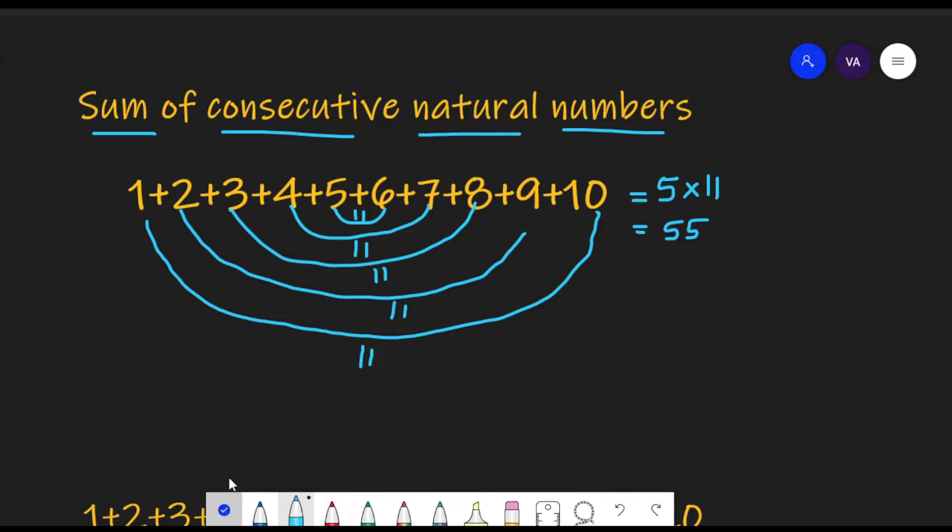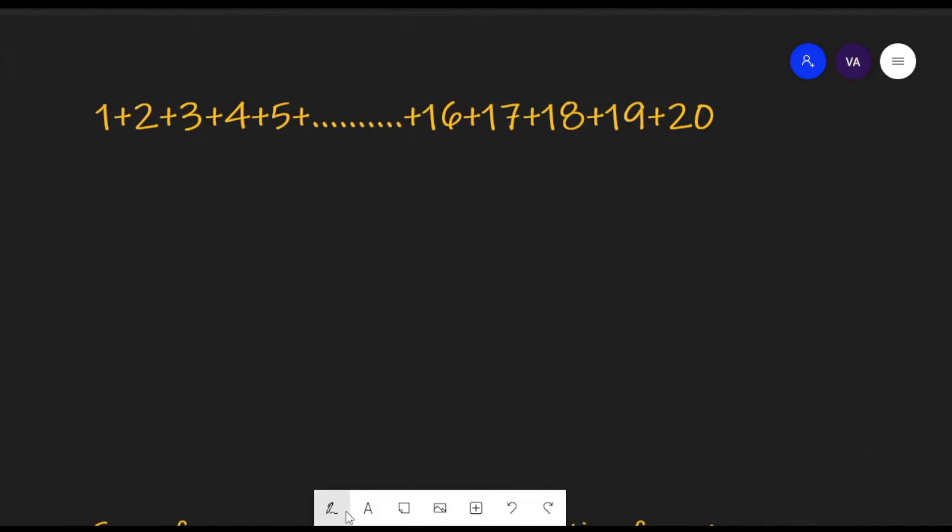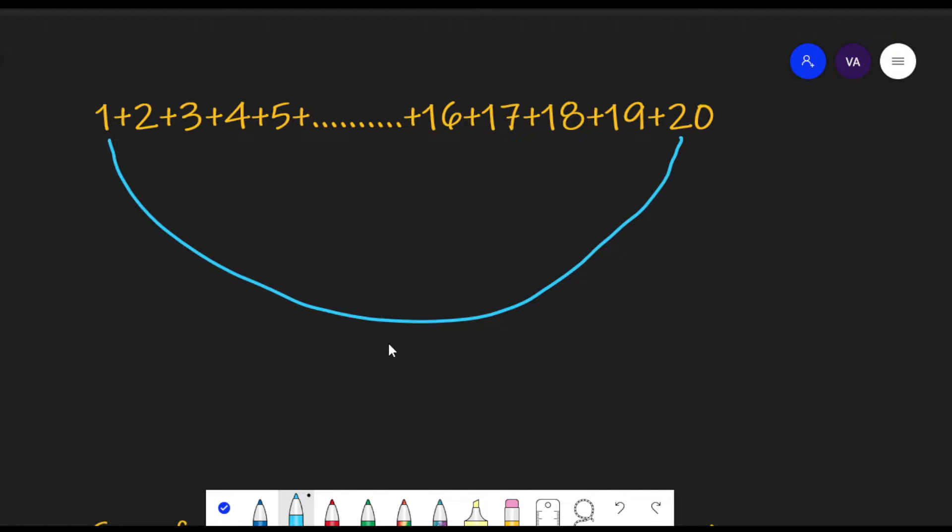Let's see with this same logic whether we can find the sum of 1 to 20 numbers. Again the same logic. The extreme numbers, let us add 20 plus 1 is 21. Then 19 plus 2 is 21 and similarly. But how many such pairs will be there? Since there are 20 numbers, there will be 10 such pairs.